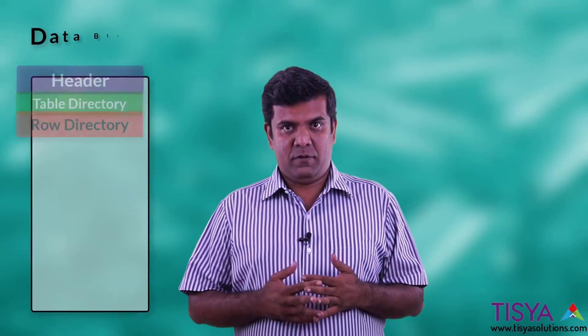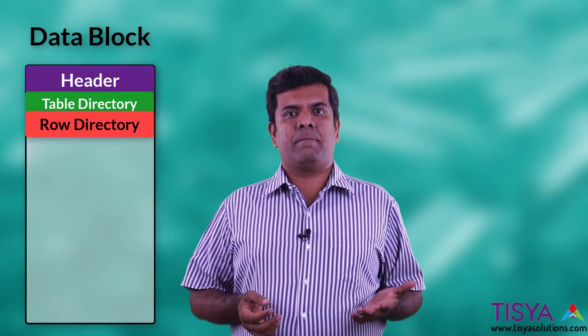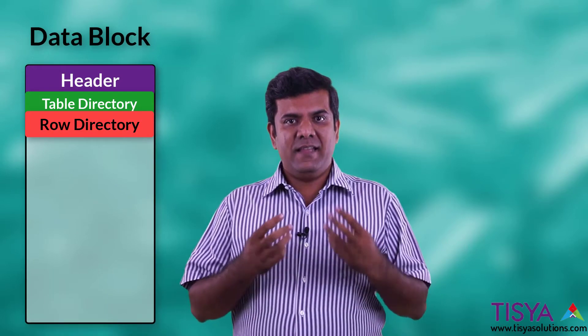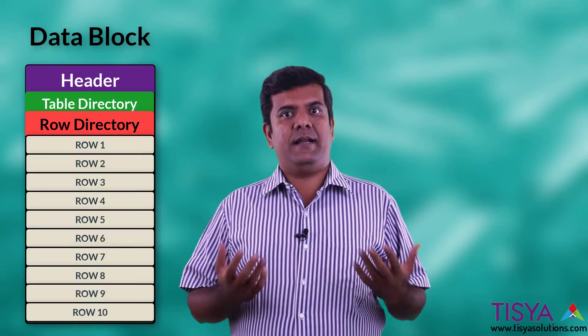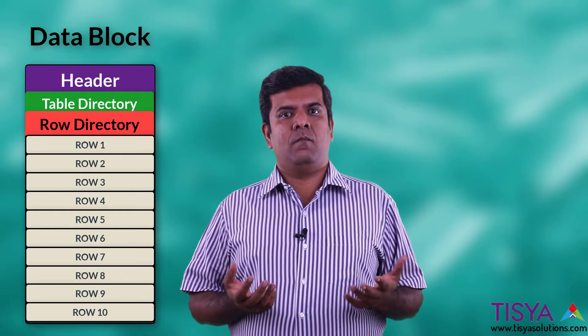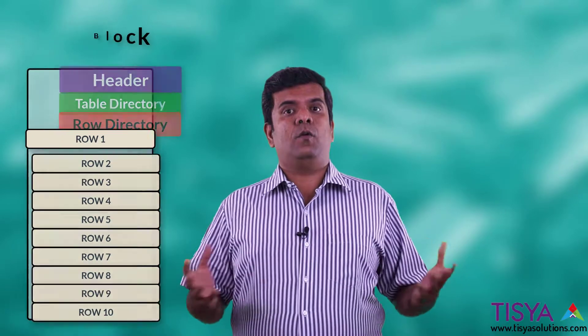Rows are what you put inside a table in an Oracle database. These rows sit inside data blocks. Let's look at how a row looks.